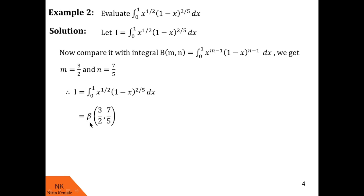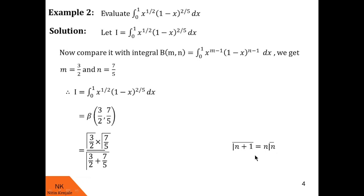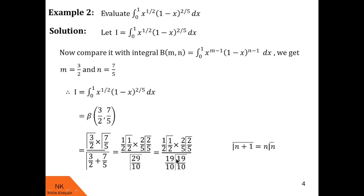We use the beta-gamma relation to write beta of 3 by 2 comma 7 by 5 as gamma of 3 by 2 into gamma of 7 by 5 upon gamma of 3 by 2 plus 7 by 5. This is further simplified using the property gamma of n plus 1 equals n into gamma of n. So gamma of 3 by 2 becomes one-half into gamma of one-half, gamma of 7 by 5 becomes 2 by 5 into gamma of 2 by 5, and gamma of 29 by 10 becomes 19 by 10 into gamma of 19 by 10.